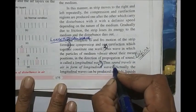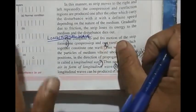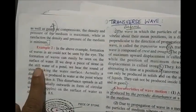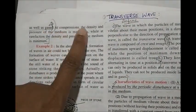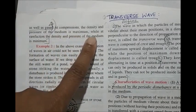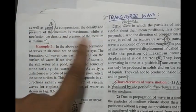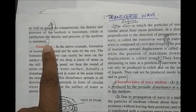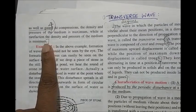Third point: longitudinal waves can be produced in solids, liquids, and gases. Fourth point: at compression, density and pressure of the medium is maximum, while at rarefaction, density and pressure of the medium is minimum. These four pieces of information you are supposed to remember about a longitudinal wave.